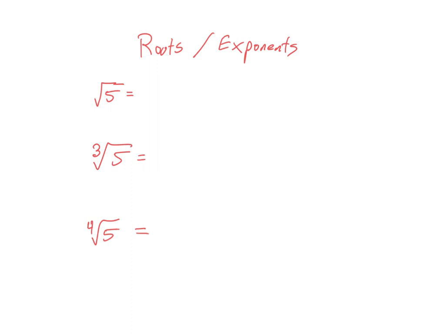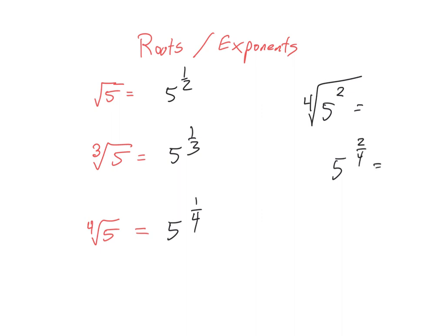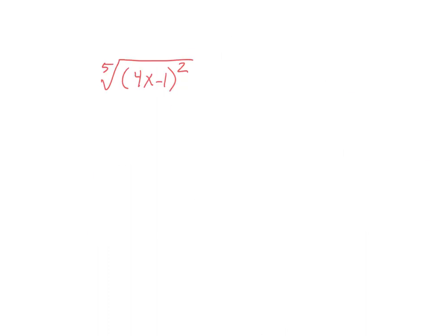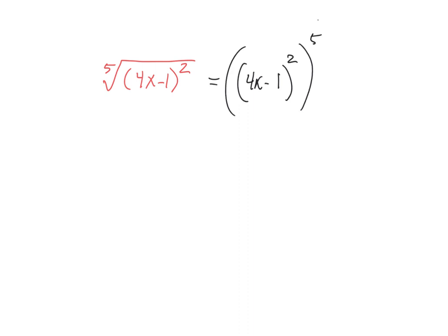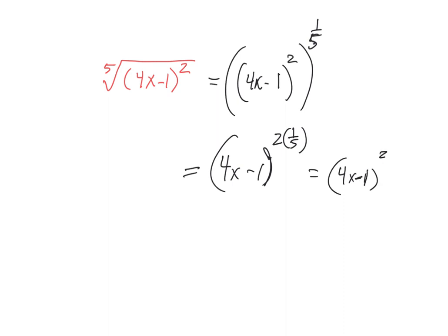Roots as exponents — we're going to rewrite them again. The square root of 5 is 5 to the 1 half. The cube root would be 5 to the 1 third. The fourth root would be 5 to the 1 fourth. If I had 5 squared to the 4th root, that would be 5 to the 2 fourths, which is 5 to the 1 half, which is the square root of 5. This one I would rewrite as 4x minus 1 squared, all raised to the 1 fifth power, giving 4x minus 1 to the 2 fifths.